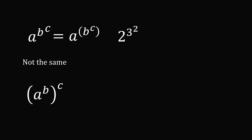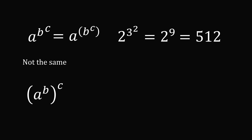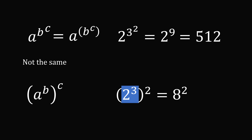For example, if you have 2 to the power of 3 squared, you need to evaluate 3 squared first. So this is equal to 2 to the power of 9, which equals 512. Now, if instead you had 2 to the power of 3 grouped first and then squared, you would get 2 to the power of 3 equals 8, and then 8 squared equals 64. So these two things are not the same.